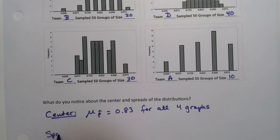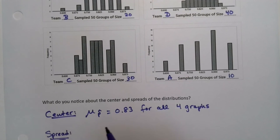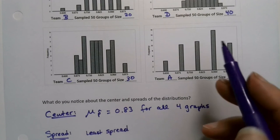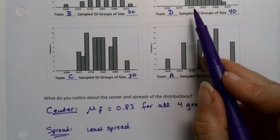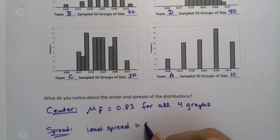The spread we already mentioned. The least spread was this graph number two, but for part D, Group D. That's what I meant to say. Instead of group four, Group D. The most spread was group A.